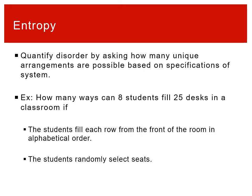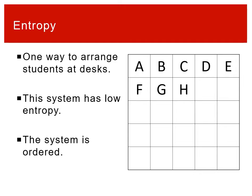The first option is that students fill each row from the front of the room in alphabetical order. The second option is that students randomly select seats. We can already make some predictions about which one will be more disordered. We want to quantify the number of unique arrangements for each of these two recipes.